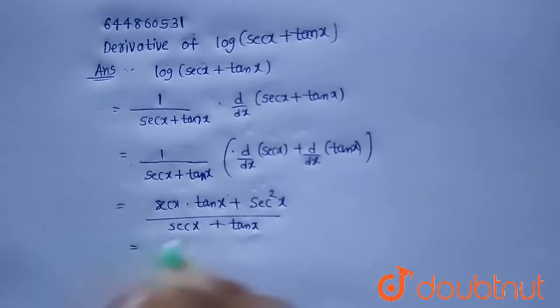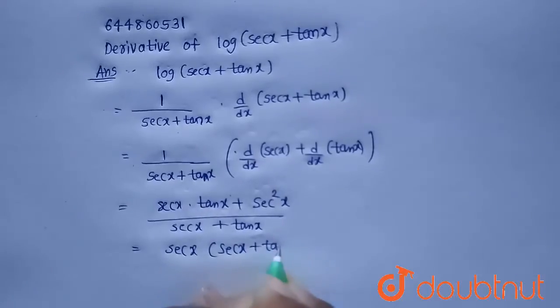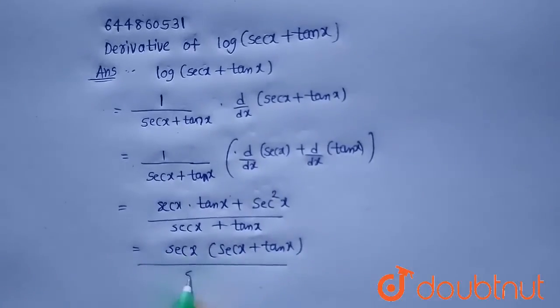Now taking out secant x common, we will get secant x plus tan x divided by secant x plus tan x.